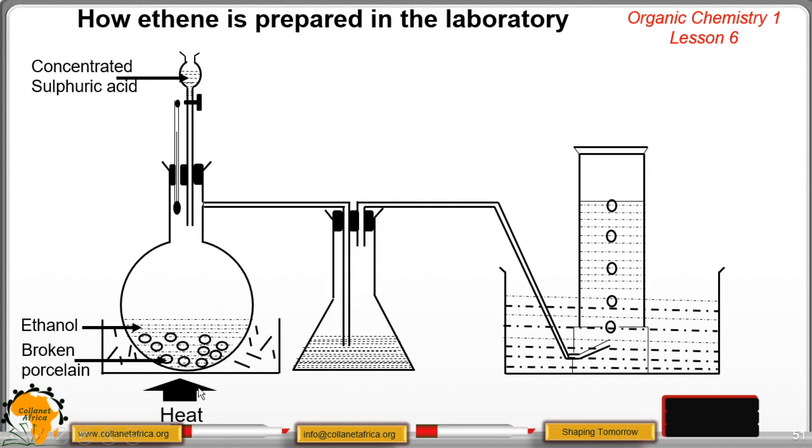Then we have the broken porcelain. They prevent the bumping when the solution is boiling, because the bumping may end up breaking our round bottom flask. Then we have the sand bath. Prevents direct heating on the surface of the round bottom flask.